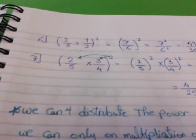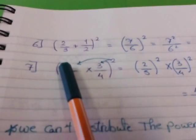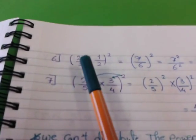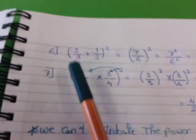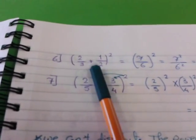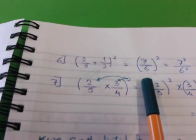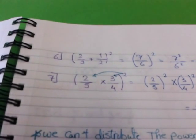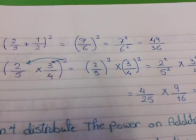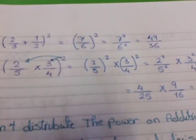Number 6: 2 over 3 plus 1 over 2, all to the power 2. In this case, we have to make the addition first — add 2 over 3 plus 1 over 2. In the calculator, it gives me 7 over 6, all to the power 2. Then I will distribute the power: 7 power 2 over 6 power 2. 7 power 2 gives 49 and 6 power 2 gives 36.